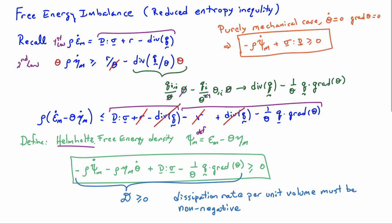In the purely mechanical theory, when theta dot is equal to 0 and grad theta is equal to 0, all the temperature terms drop out and we are left with something slightly simpler. It's just simply minus rho times the time rate of change of the Helmholtz free energy per unit mass plus the stress power, sigma double contracted with D, needs to be greater or equal to 0. So it's just a slightly simpler version when you don't have the temperature changing in time and there are no temperature gradients in the system.